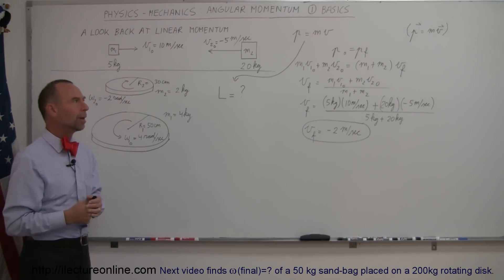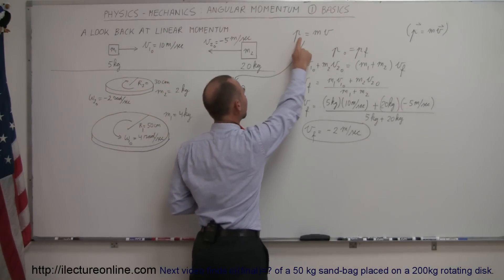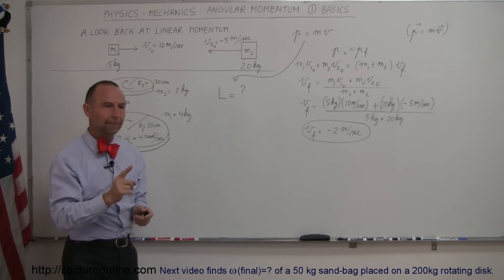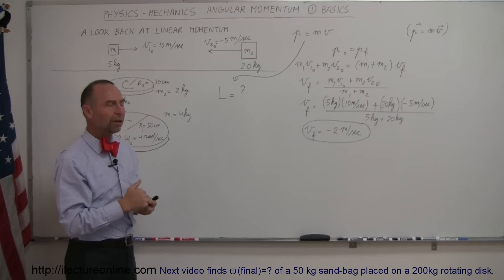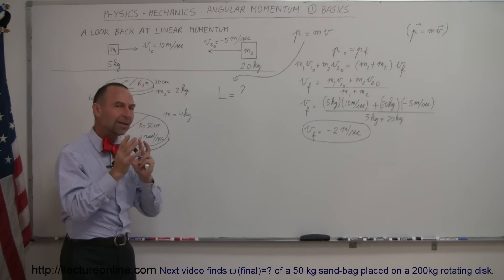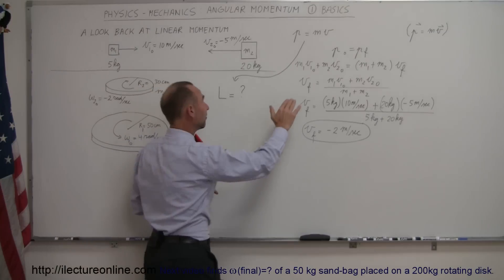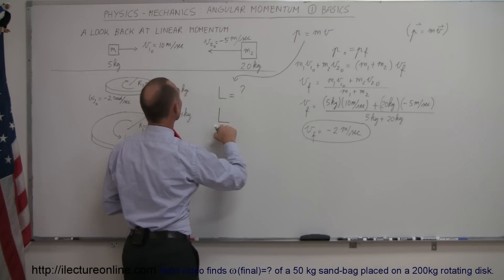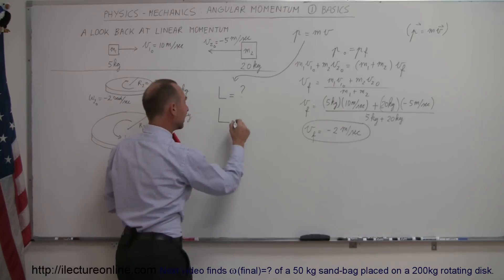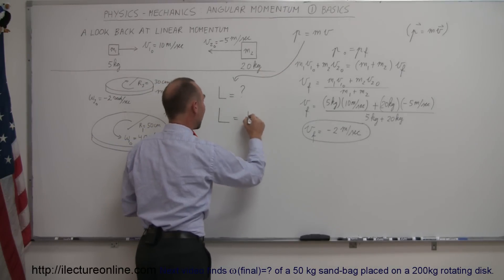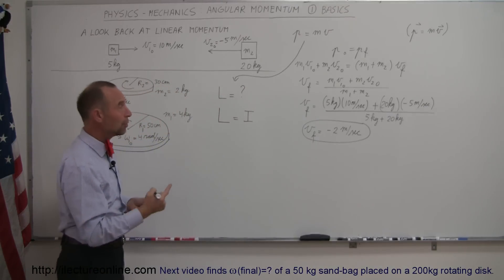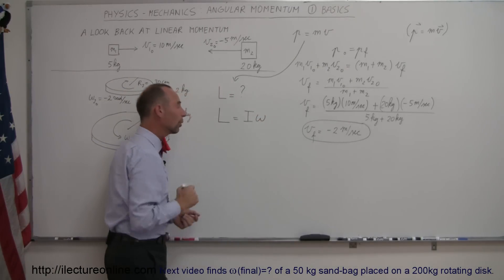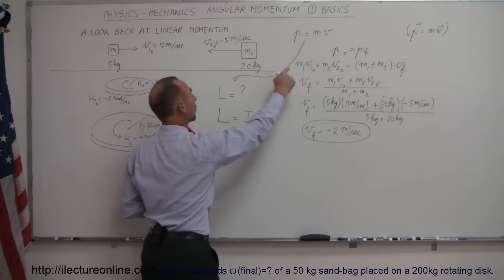What does the equation for angular momentum look like? For linear momentum we have P equals mass times velocity. The rotational equivalents: instead of mass we use moment of inertia, and instead of linear velocity v we use angular velocity omega — the rate at which something rotates. So angular momentum L equals I times omega. This is analogous to linear momentum P equals mv.